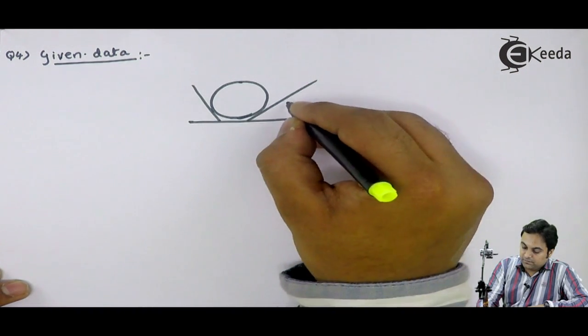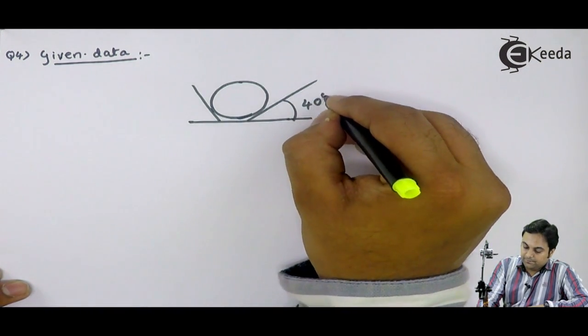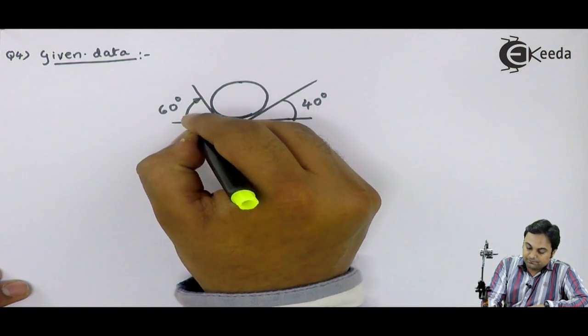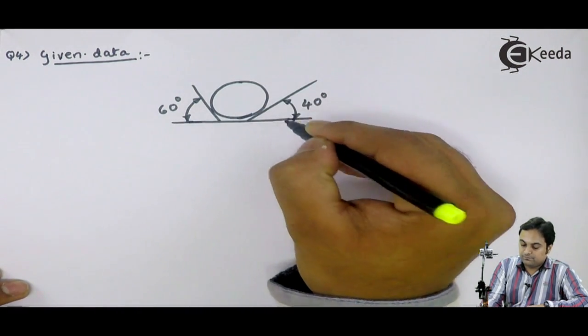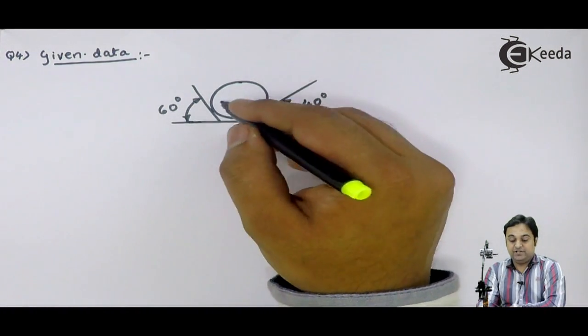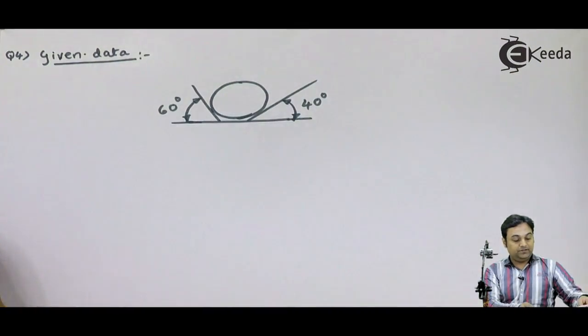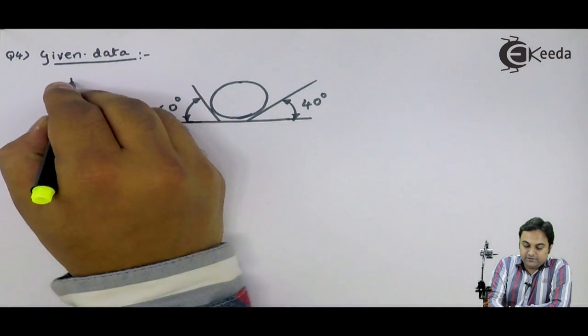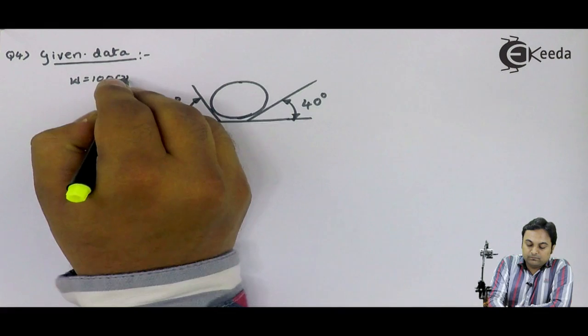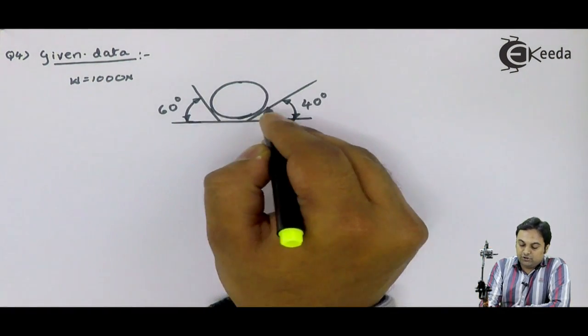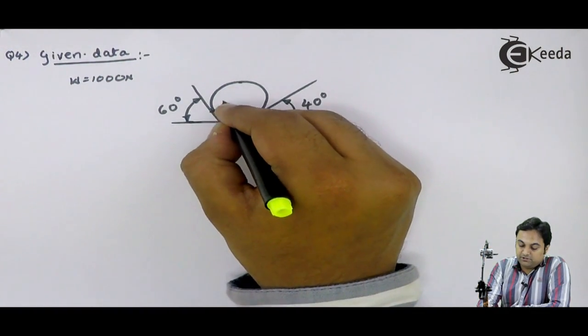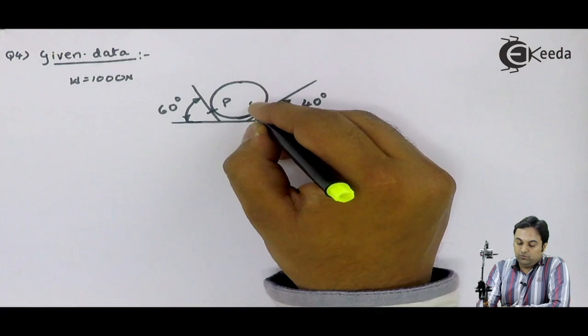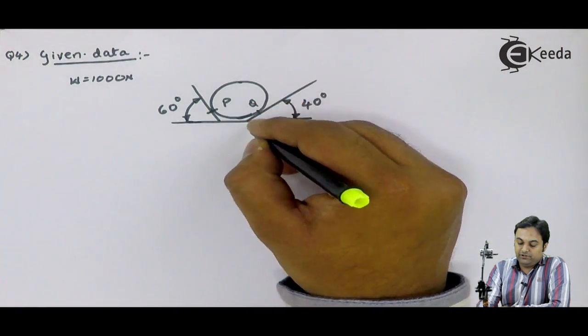One plane is inclined at 40 degrees, the other at 60 degrees, and a sphere is resting between them. The weight of the sphere is given as 1000 Newton. We have to calculate the reaction offered by both supports. I've marked P as the contact point between sphere and 60 degree inclined plane, Q as the contact point between 40 degree inclined plane and the sphere.